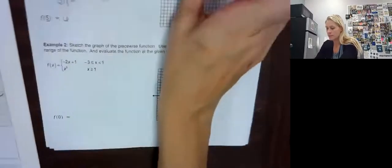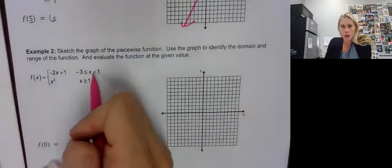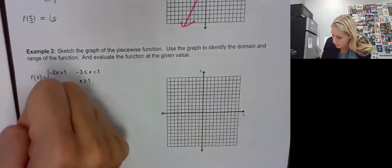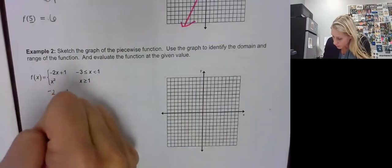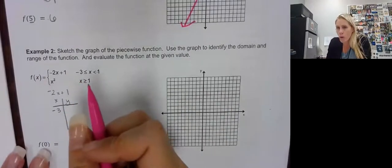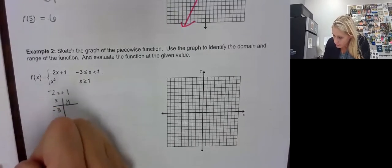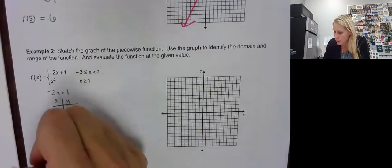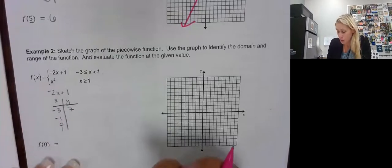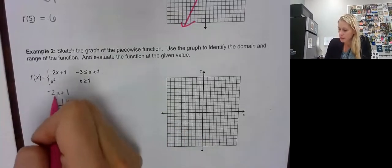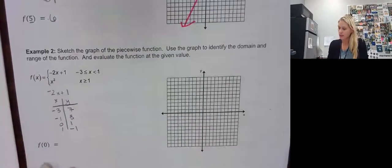Let's try another one. On this one we have a linear and a quadratic — that parabola. We stop at negative 3 and only go to 1. Let me make my table. This is linear so it should all be the same slope, so I might go negative 1, 0, and 1. Negative 3 times negative 2 is 6, plus 1 is 7. Negative 1 times negative 2 is 2, plus 1 is 3. Zero times negative 2 is 0, it's 1. And 1 times negative 2 is negative 2, plus 1 is negative 1.